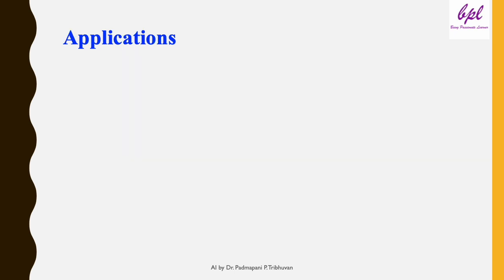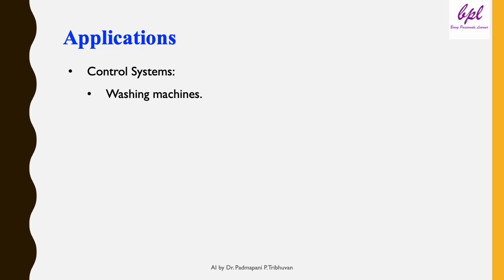FIS is widely used in various domains ranging from household appliances to advanced AI systems. In control systems, washing machines use FIS to determine washing time based on dirt level and load size. For example, if clothes are only slightly dirty, the washing machine will automatically reduce washing time to save energy and water.